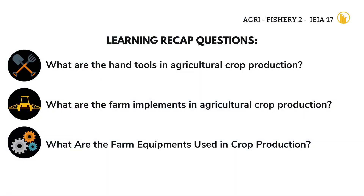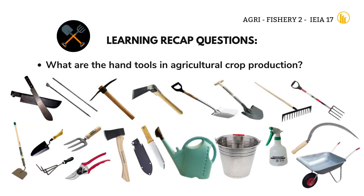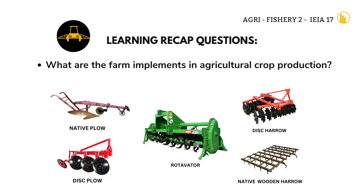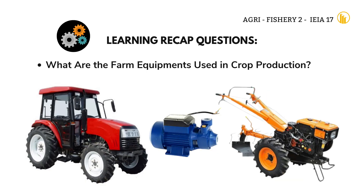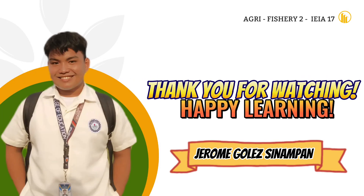For our learning recap: The common hand tools used in agriculture are: Bolo, Crowbar, Pick Mattock, Grab Hoe, Spade, Trowel, Rake, Spading Fork, Light Hoe, Hand Trowel, Hand Cultivator, Hand Fork, Pruning Shears, Axe, Knife, Sprinkler, Water Pail, Sprayer, Wheelbarrow, and Sickle. The farm implements used in agricultural crop production are: Native Plow, Disc Plow, Face Harrow, Native Wooden Harrow, and Rotavator. The common farm equipment are: Hand Tractor, Four-Wheel Tractor, and Water Pump. Thank you for watching. Happy learning!